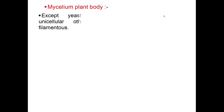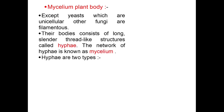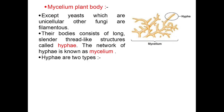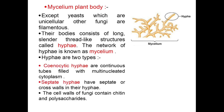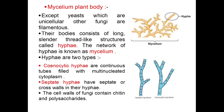The plant body, or mycelium — except yeasts which are unicellular — other fungi are filamentous. Their bodies consist of long, slender, thread-like structures called hyphae. The network of hyphae is known as mycelium. Hyphae are of two types: coenocytic hyphae, which are continuous tubes filled with multinucleated cytoplasm, and septate hyphae, which have septa or cross walls. The cell walls of fungi contain chitin and polysaccharides.